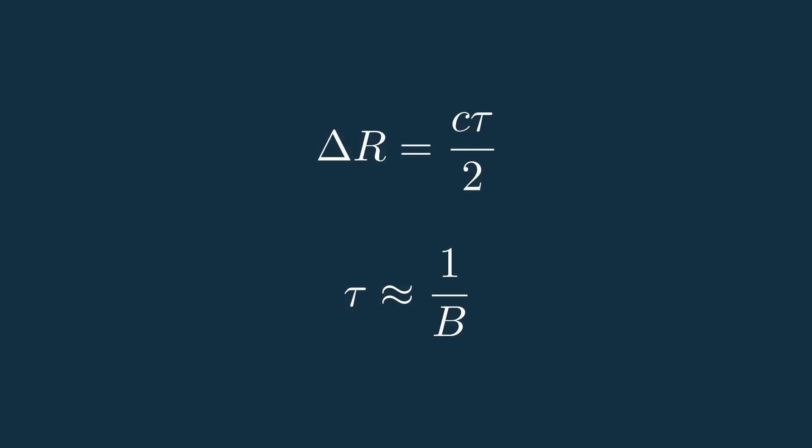Using this, we can say that the range resolution is roughly equal to the speed of light divided by 2 times that bandwidth. This is something I'll dive into more in a later video when I talk about pulse compression, because we can actually kind of game this to get good range resolution while also having good maximum range.